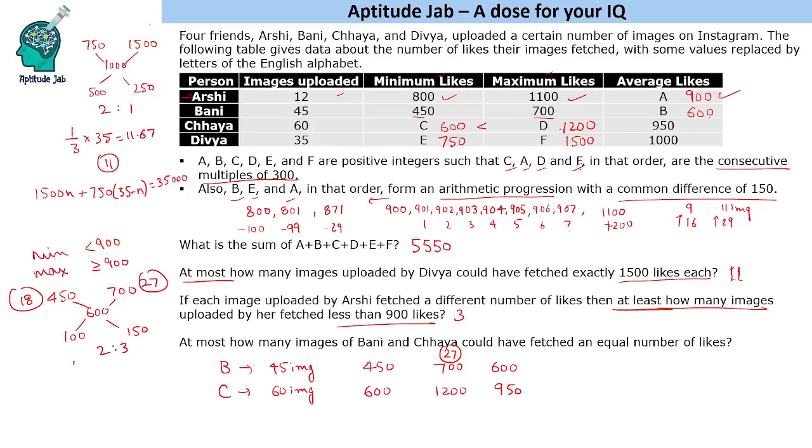Now we need to check if 27 is really the answer. Suppose we have 27 images at 700, one image is 600, one image is 1200. So we will count what is the total: 6 + 27 × 7 = 189, and 189 + 12 is 200, and 189 + 18 = 207. 20,700 in how many images? 29 images. For the remaining 31 images, total likes will be 950 × 60 = 57,000. So remaining 31 images should be 570 - 207 = 363. That means 36,300 likes in 31 images.